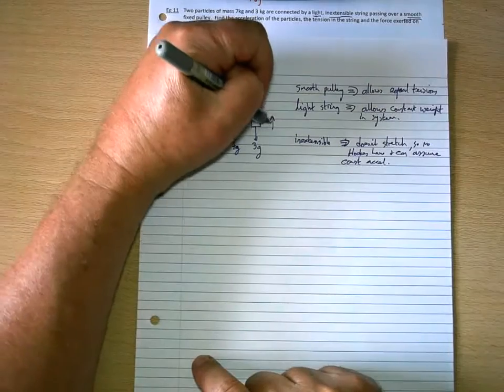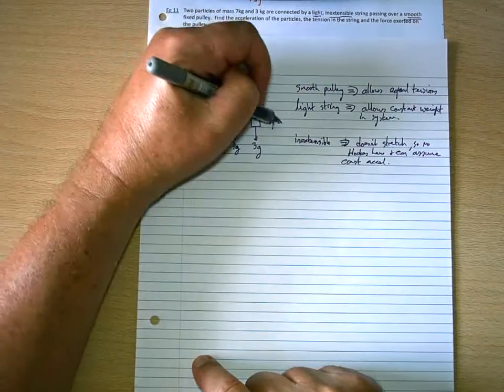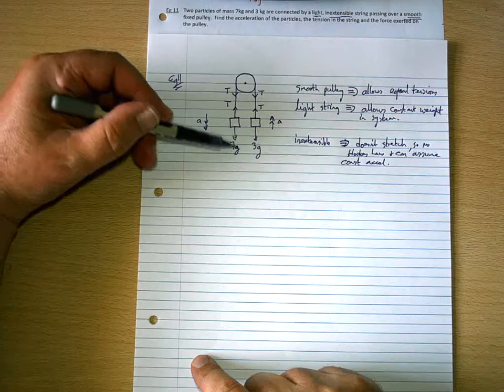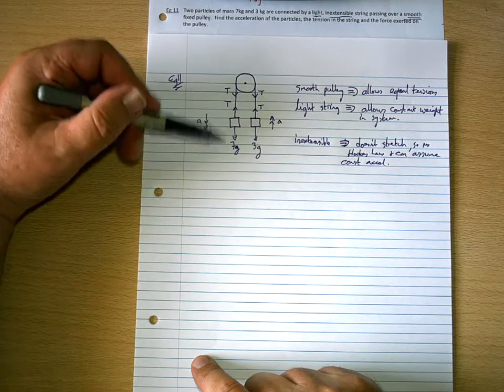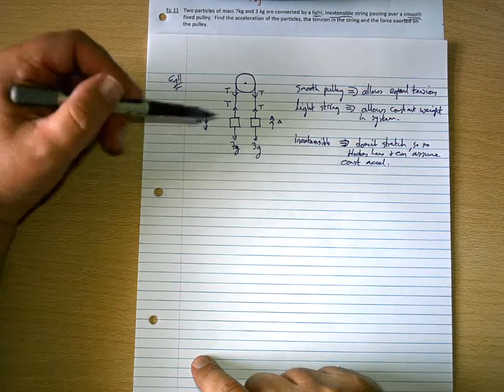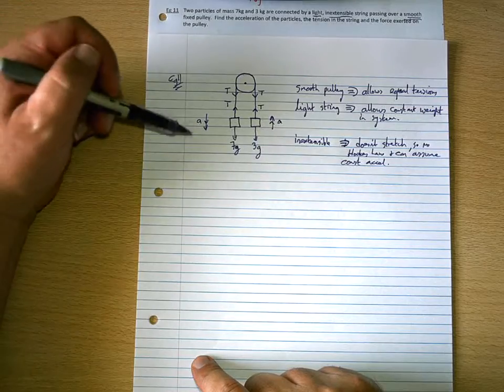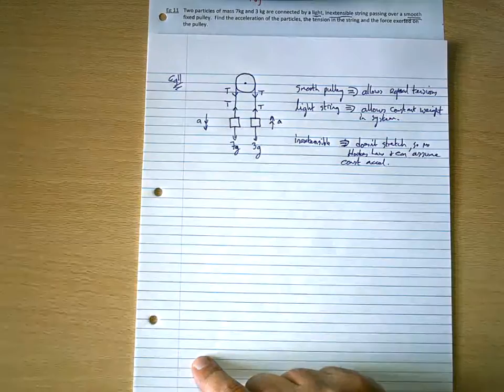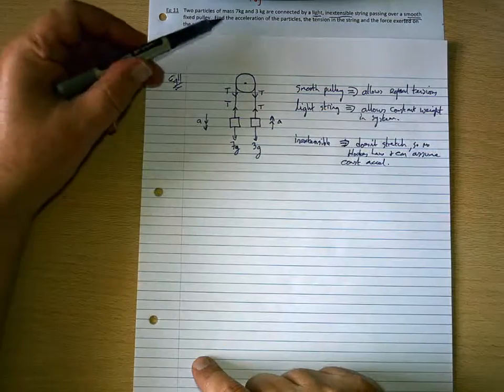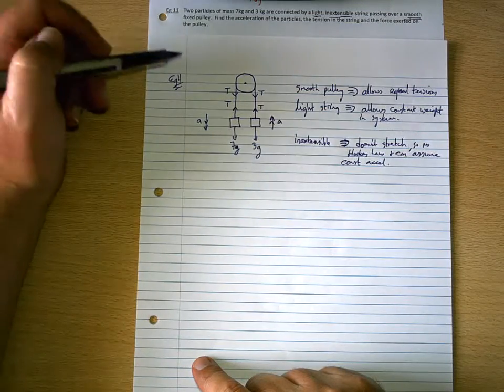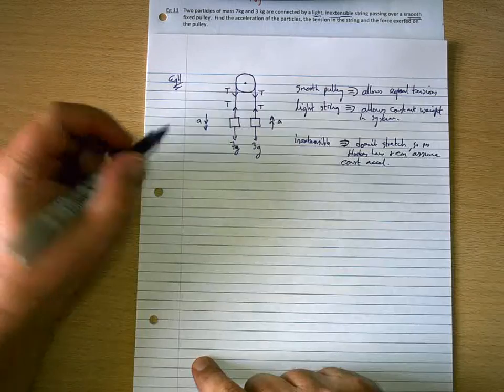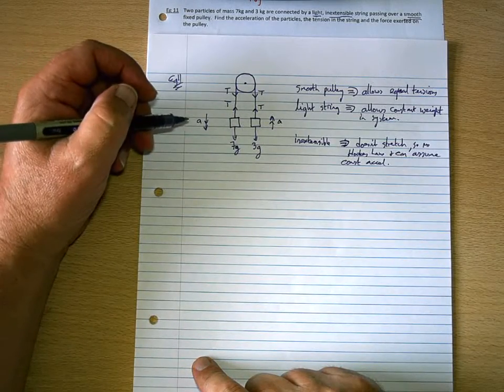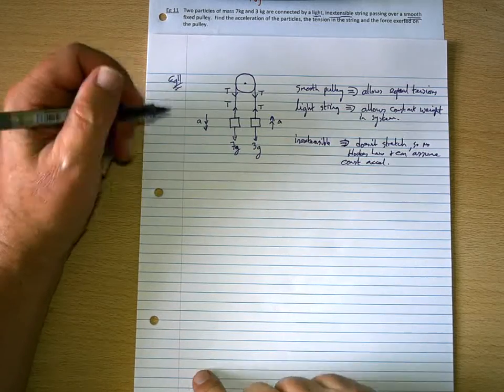Right. So, let's do the mechanics. So, we know that when this is released, it's going to fall, the 7g weight is going to cause the left-hand side to fall, and the right-hand side to rise with the same constant acceleration. And what we want to do is to find the acceleration of the particles, the tension in the string, and the force exerted on the string. When we work with pulleys, when the thing is moving, just like in previous examples with Newton's Second Law, we take the direction of motion to be positive.